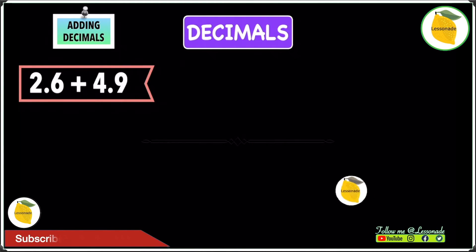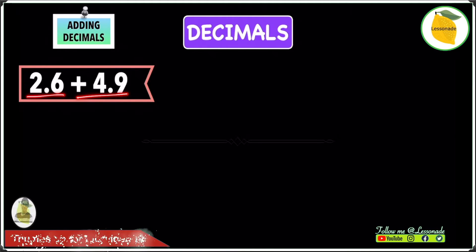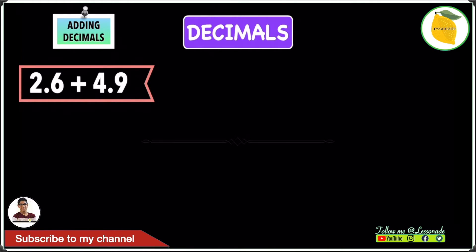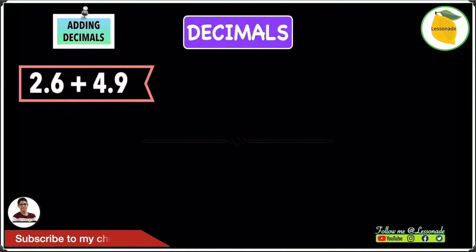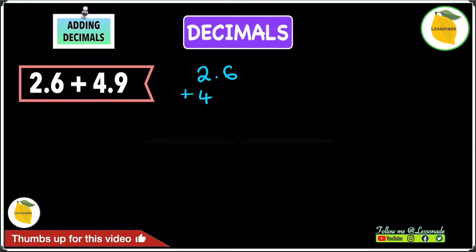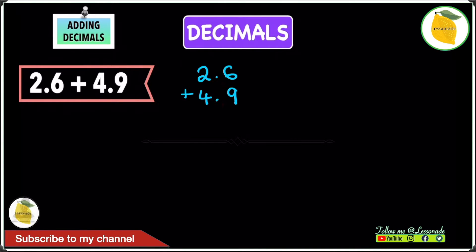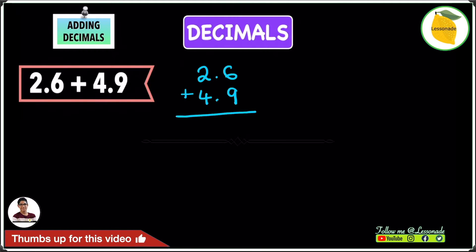Now let's have a look at an adding decimals example. The example we have is 2.6 plus 4.9. Whenever you are adding decimals, we're going to do the same thing as when we are adding whole numbers, but this time we make sure the decimal point is lined up. As you can see, the decimal points are lined up.